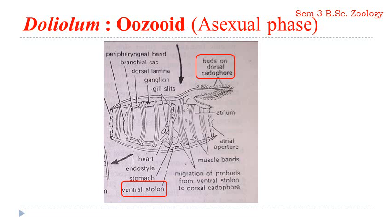From the gonozoid, gametes develop and undergo external fertilization, forming a zygote. The zygote hatches into a tailed tadpole larva, which then metamorphoses into the ozoid. The ozoid resembles the gonozoid in shape — almost barrel-shaped — with slight differences. The ozoid lacks gonads; it has no testes or ovary. Like the gonozoid, the ozoid has atrial and branchial apertures with 10 to 12 lobes. However, against eight muscle bands in the gonozoid, the ozoid possesses nine muscle bands. The pharyngeal gill slits in ozoids are large but few in number.